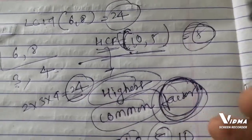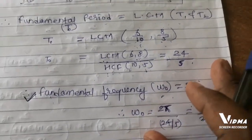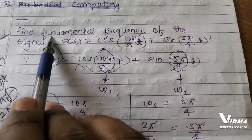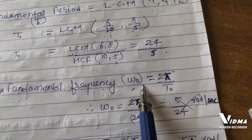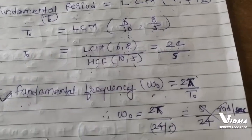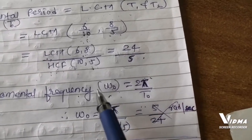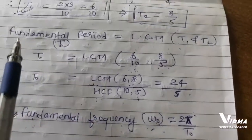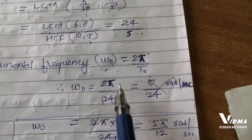We obtained LCM of 6 and 8 as 24, and HCF of 10 and 5 as 5. So T₀ = 24/5. Now let us calculate the fundamental frequency omega 0 using the formula omega 0 = 2π/T₀ = 2π/(24/5). Simplifying, the 5 goes to the numerator, and 2 and 24 cancel partially.